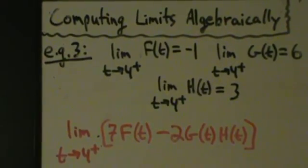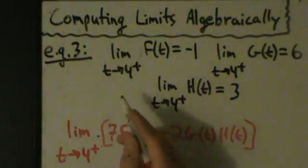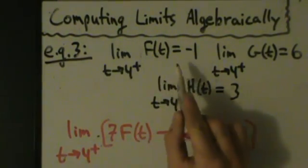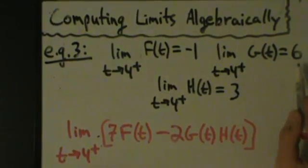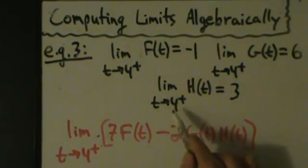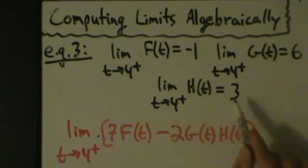Hey guys, alright, so here's our third example for computing limits algebraically using the properties that we talked about a couple videos ago. So here, example 3: limit as t approaches 4 from the right of big F of t equals negative 1, limit as t approaches 4 from the right of big G of t equals 6, and limit as t approaches 4 from the right of big H of t equals 3.